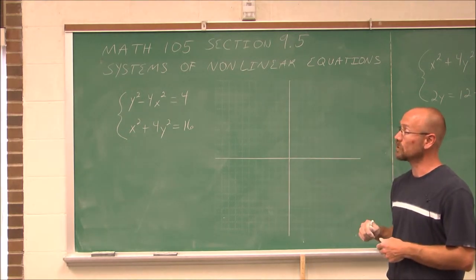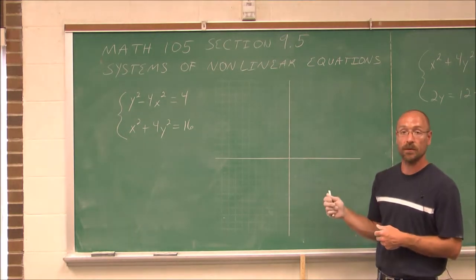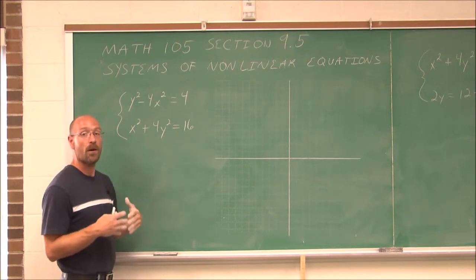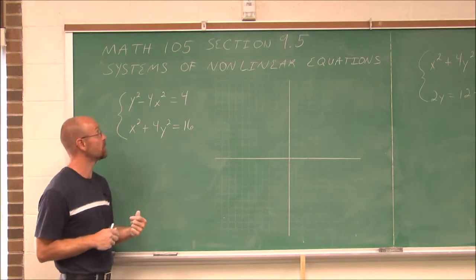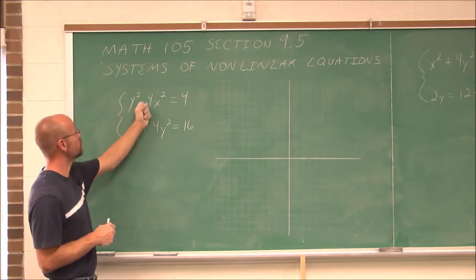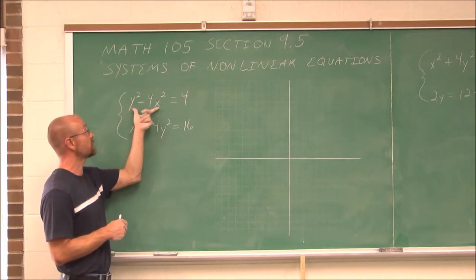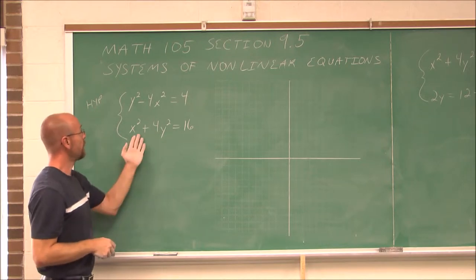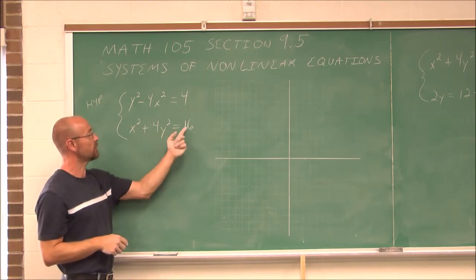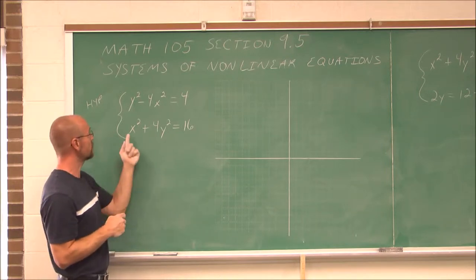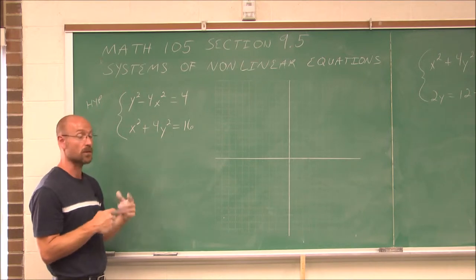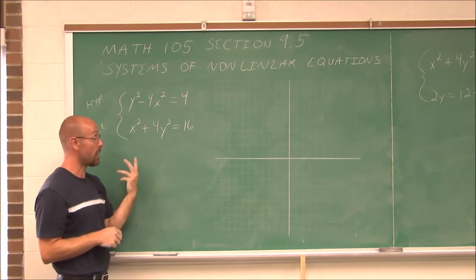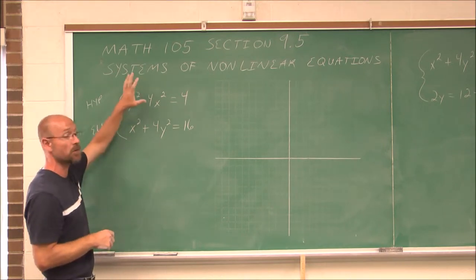The first example we're going to do is solve a system of nonlinear equations by graphing. To graph these, we first need to identify what type of conic section we have. The first equation is y squared minus 4x squared equals 4. I see it is the difference of squared terms, so I know I'm going to be graphing a hyperbola. The second equation is x squared plus 4y squared equals 16. Initially I might think that's a circle, but these have different coefficients, so it's an ellipse. In order to graph a hyperbola or an ellipse, I want to put them in standard form.